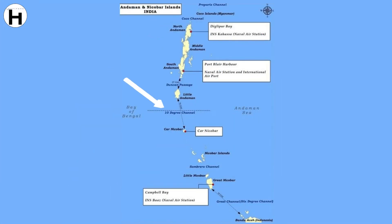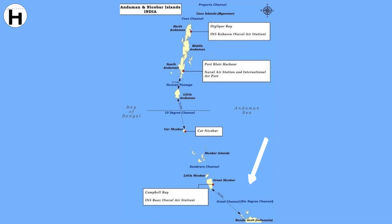The Andaman and Nicobar Islands are separated by channels, as you can see on the map. Specifically, the 10-degree channel separates the Little Andaman and Car Nicobar. The Great Channel, or the 6-degree channel, separates India and Indonesia. So two channels are present on the eastern side of the Indian Ocean: the 10-degree channel and the Great Channel.